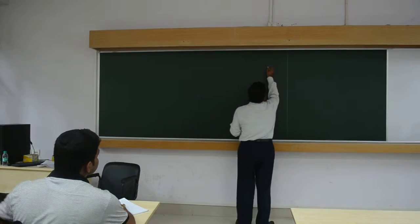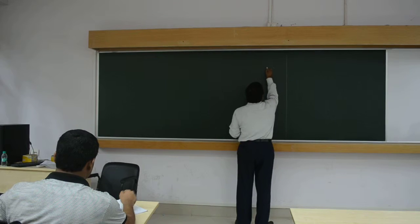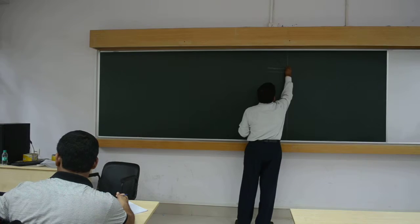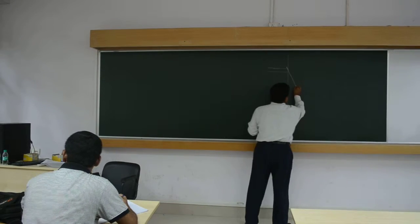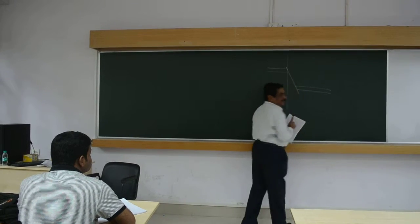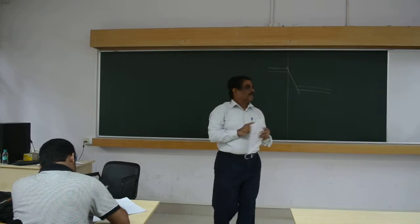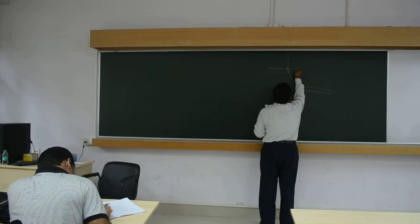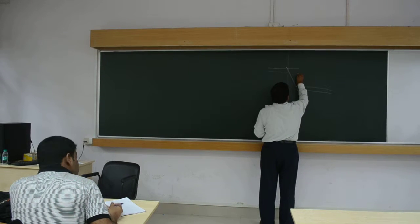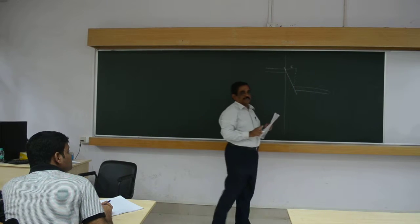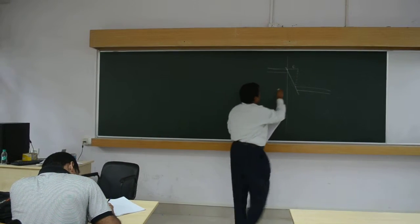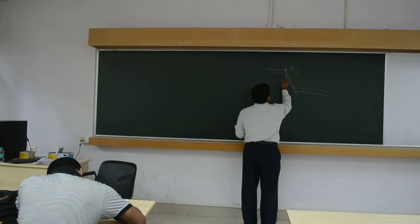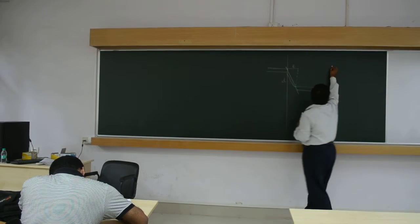Suppose this is the normal. Now, what is said? This is the extension. This is the extension of the right key. Then, this is the displacement. From here, it has come to this place. So, this is the displacement. So, that E is the extension.